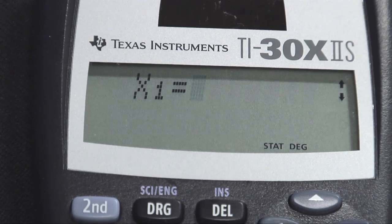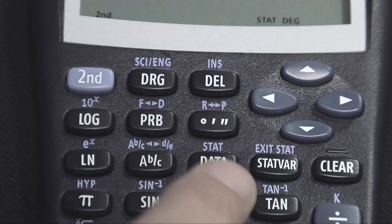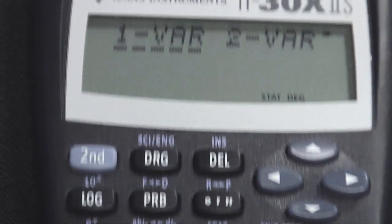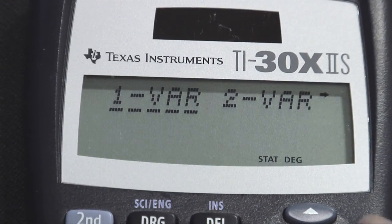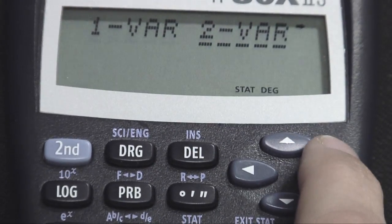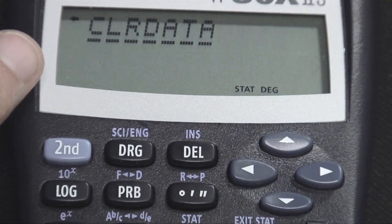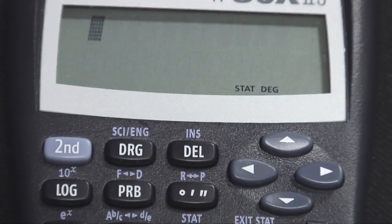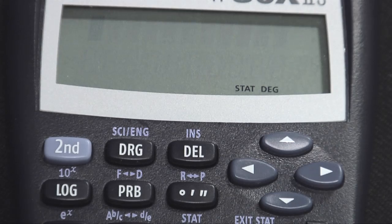The way that you clear the list is you would hit second and data, which was the stat button. We've seen this screen before, but if I arrow over to where it says clear data and then hit the enter button, I've now cleared whatever old numbers were in the list, and I would then be ready to enter data.